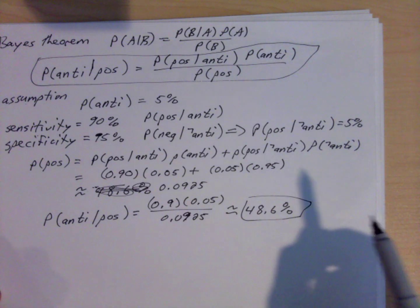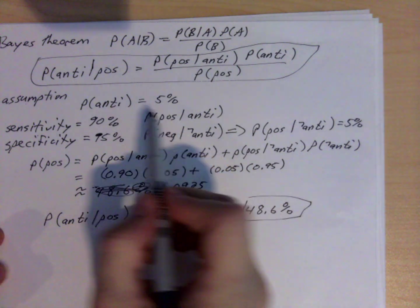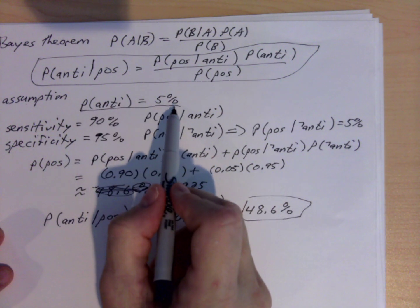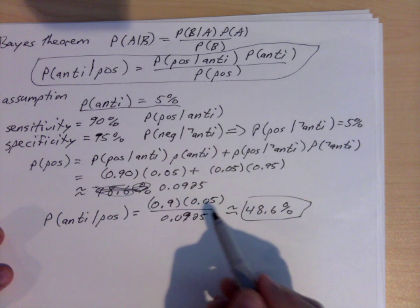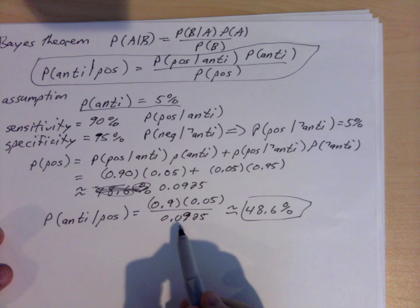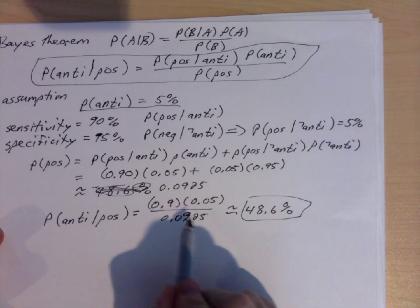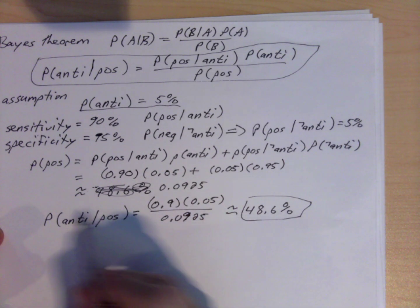So once again, as I also point out in the article, as this number here goes up, the numerator here goes up, the bottom will change somewhat, but the numerator goes up and ultimately the overall probability would go up.